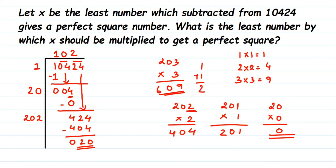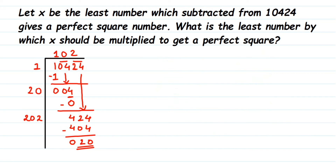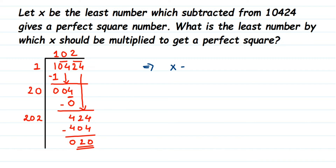Subtracting 404 from 424 gives a remainder of 20. This remainder 20 is the smallest number that must be subtracted from 10,424 to get a perfect square. So x = 20. That completes the first part of the question.